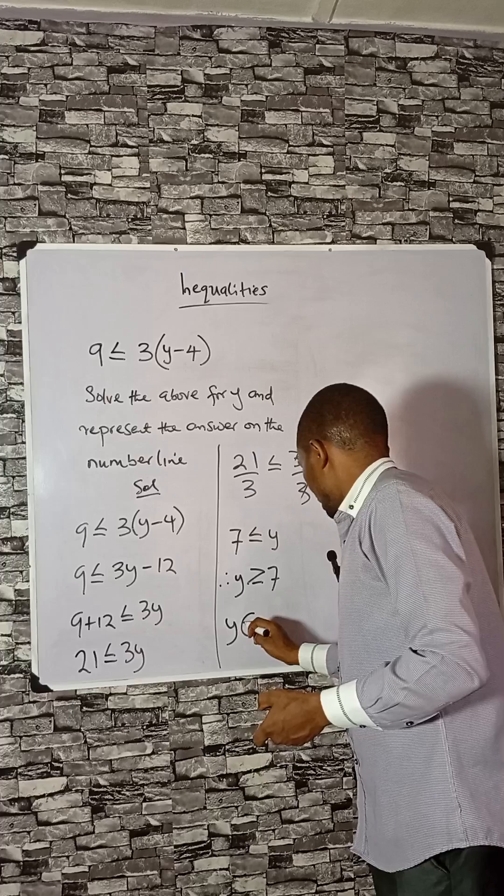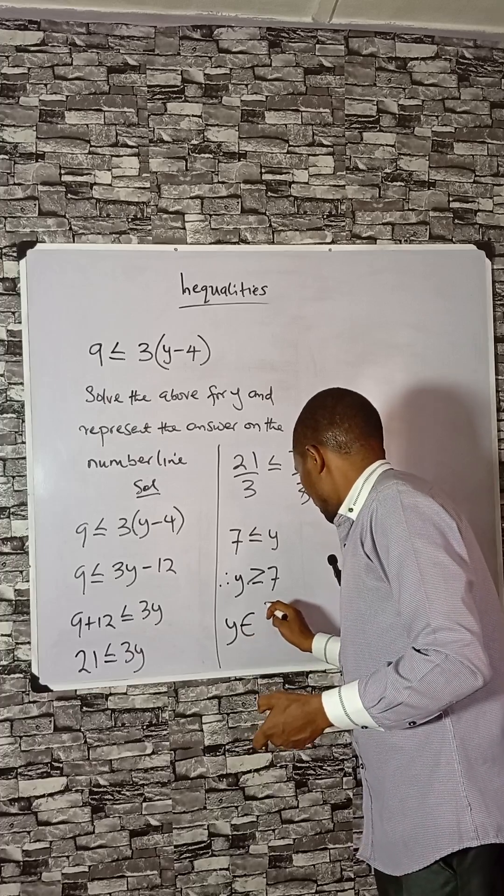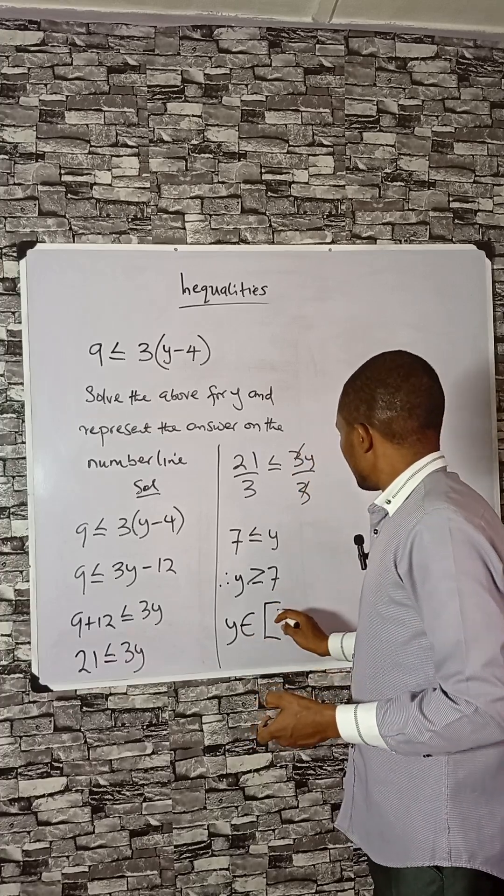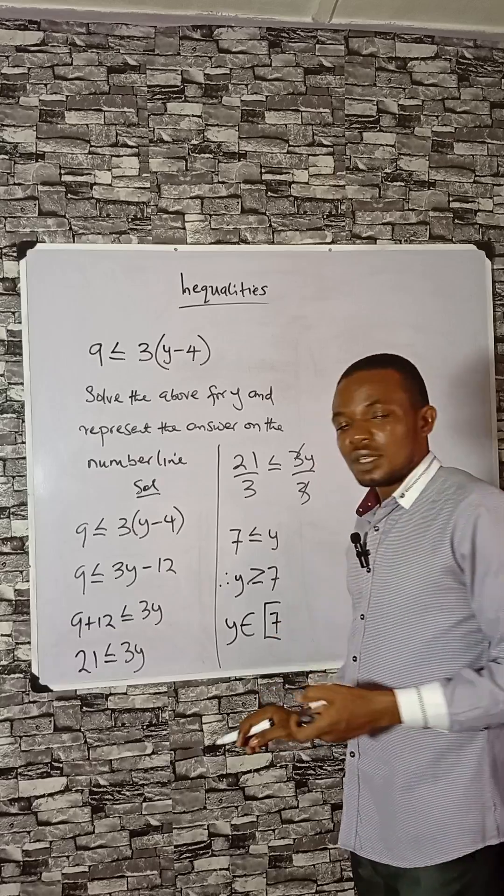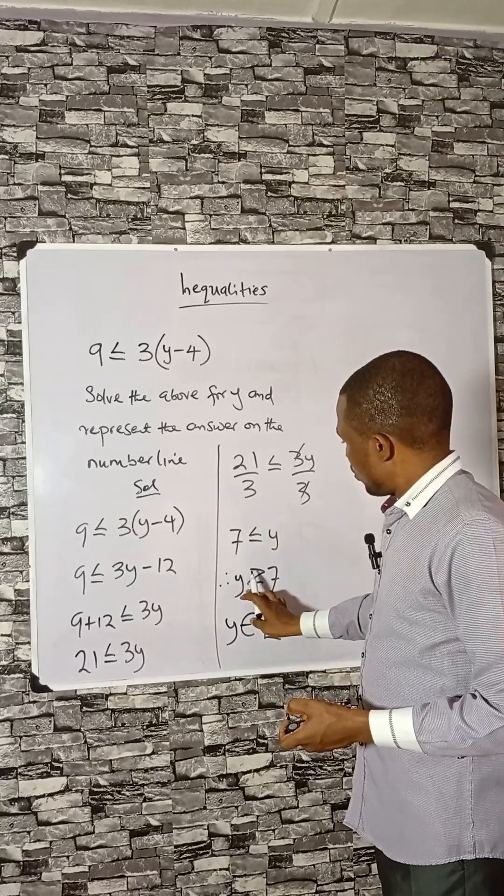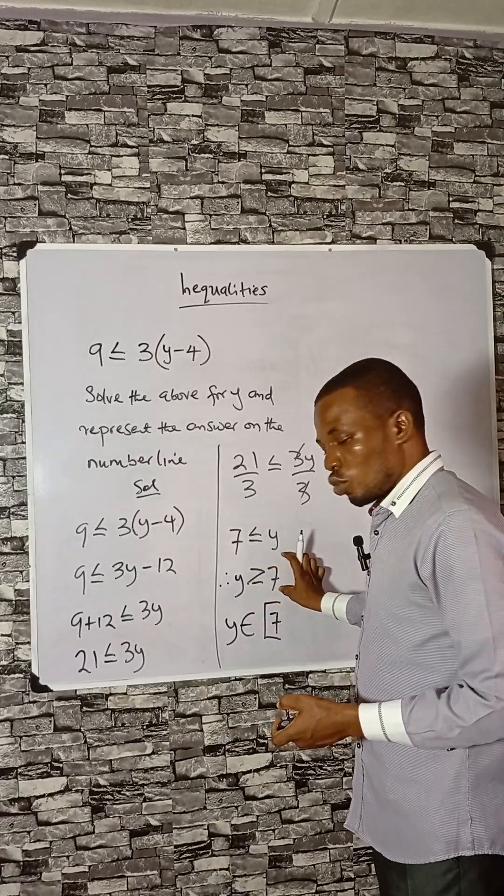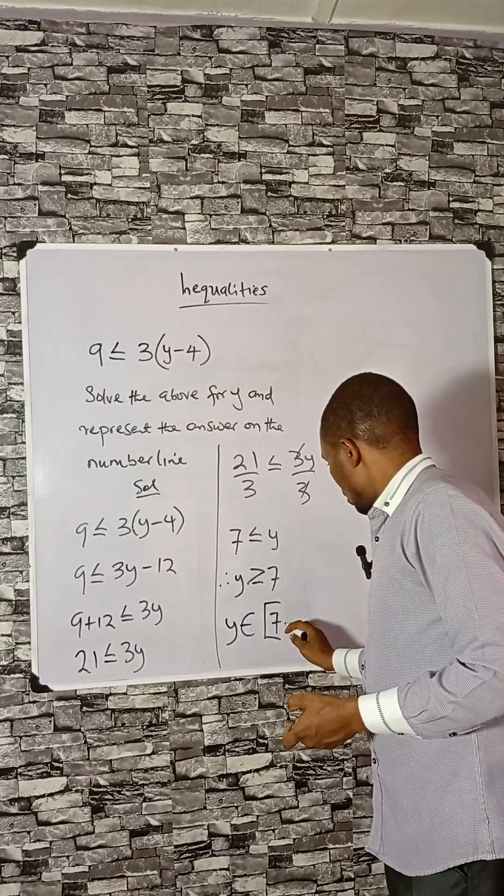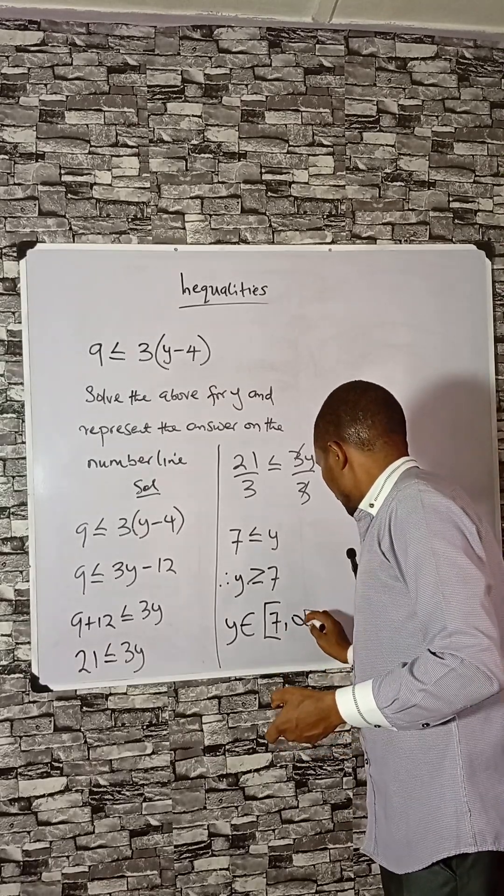Y is an element of... 7 is also a member of this set because it is greater than or equal to 7. So I'm using a solid bracket here, comma, positive infinity. The bracket means that 7 is also a member of this set.